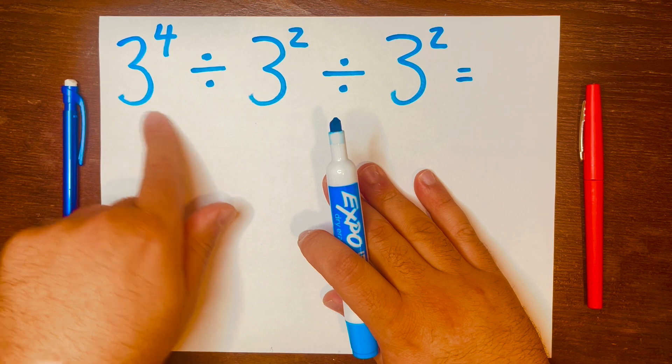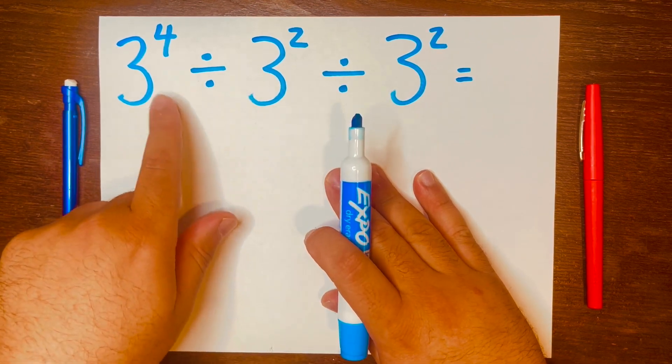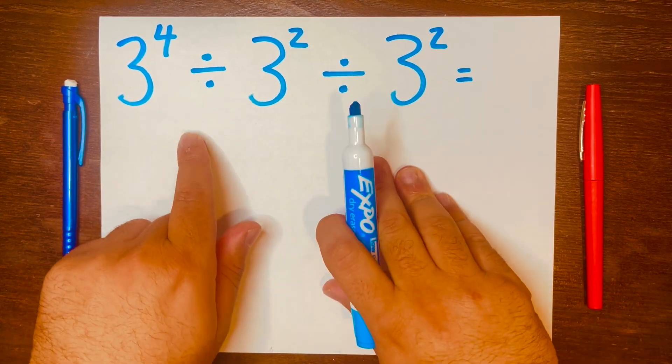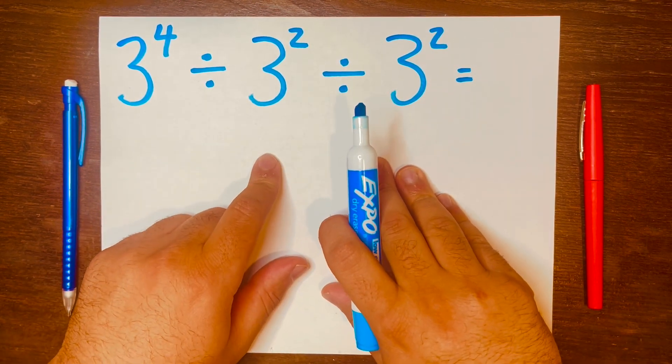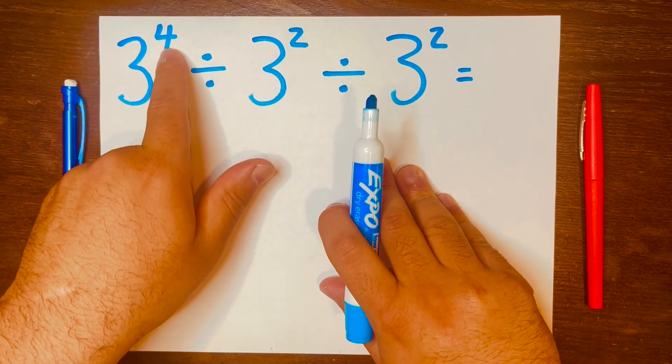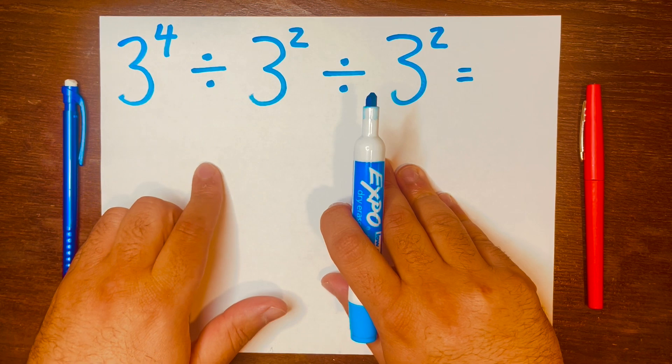Alright, so first things first. I look at the problem, I see exponents, I see division symbols. I'm thinking of PEMDAS, reading from left to right. And three times three times three times three is what this exponent wants us to do, so let's go ahead and do that mentally.